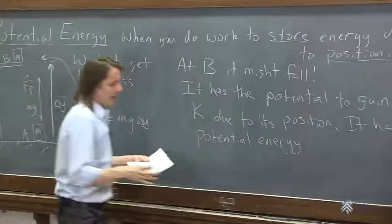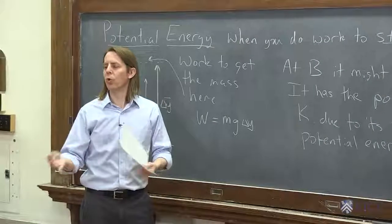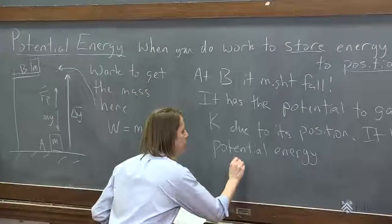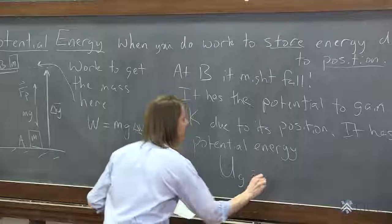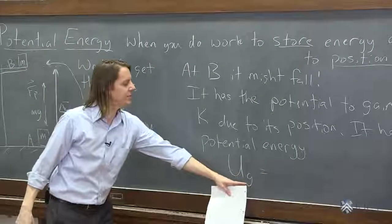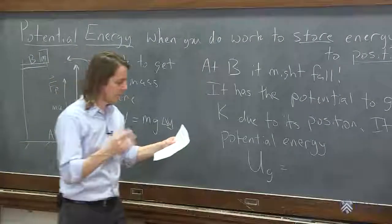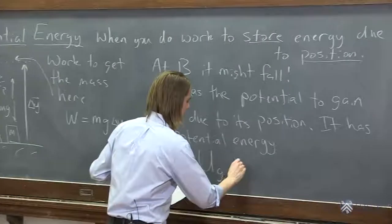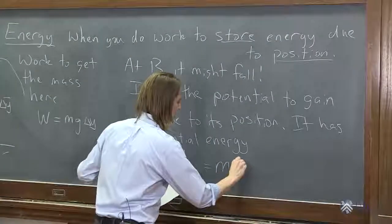So if we're going to write the potential energy, in this case where the work was done against gravity, we could call it U subscript G. So we'll use that to mean gravitational potential energy. And this also is when you're near the Earth. We'll say it's equal to M G Y.